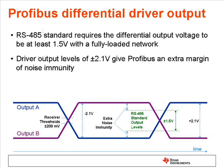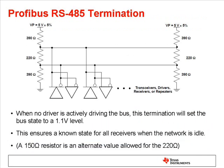The differential output voltage capability should be 2.1 volts, somewhat higher than the standard RS-485 level of 1.5 volts. The PROFIBUS termination uses bias resistors to set the default bus levels to a known state.